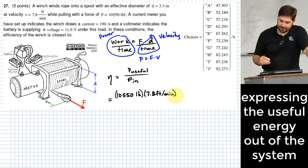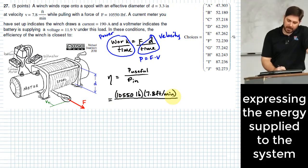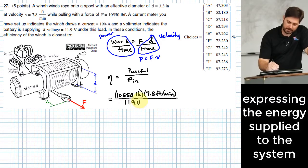Then I'm going to take this and divide it by my power in. My power in is just going to be voltage, 11.9 volts, times my current, 190 amps.